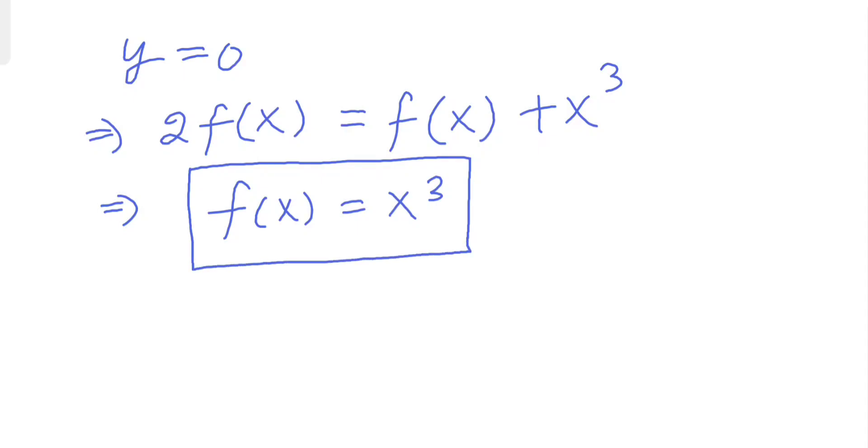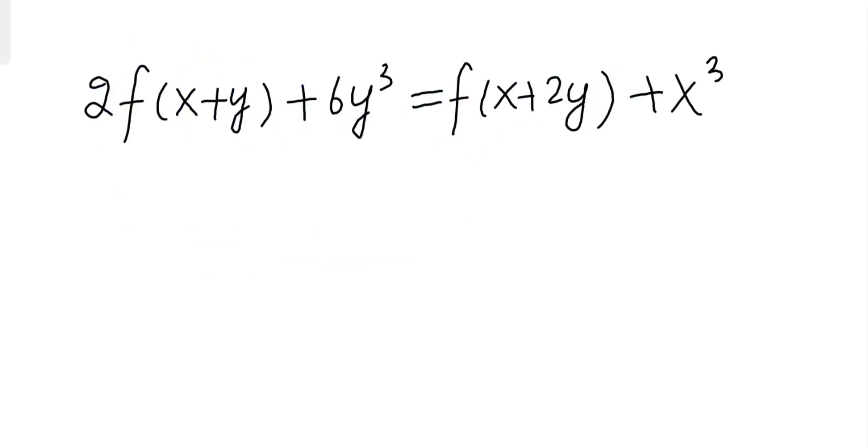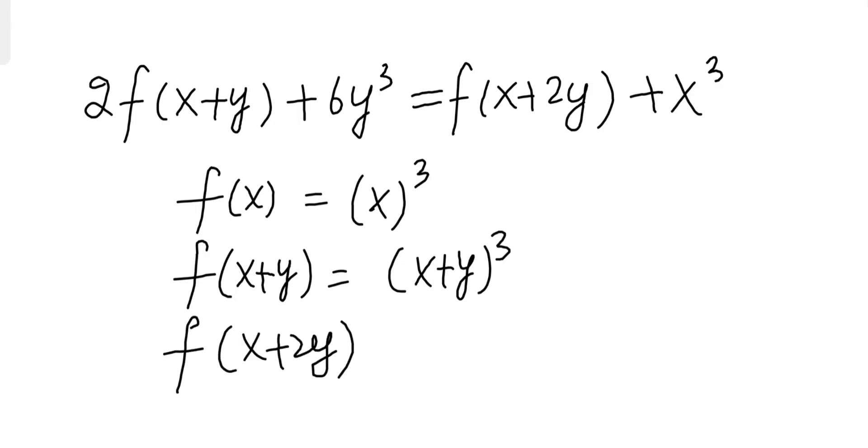So we'll try to use this in our original equation and let's see what happens. Can we simplify for the function? Let's try. Because f(X) equals X³, it means f(X+Y) must equal (X+Y)³ and f(X+2Y) must equal (X+2Y)³ plus X³. So let's use this here and simplify the equation.